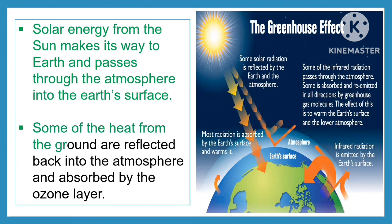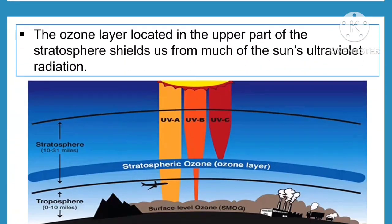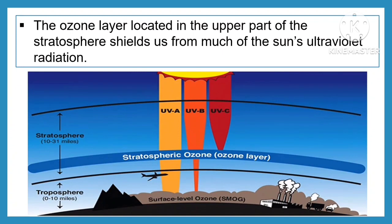Some of the heat from the ground is reflected back into the atmosphere and absorbed by the ozone layer. The ozone layer, located in the upper part of the stratosphere, shields us from much of the sun's ultraviolet radiation.